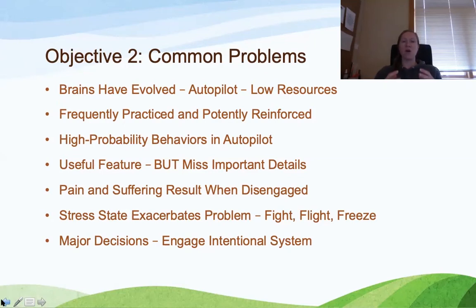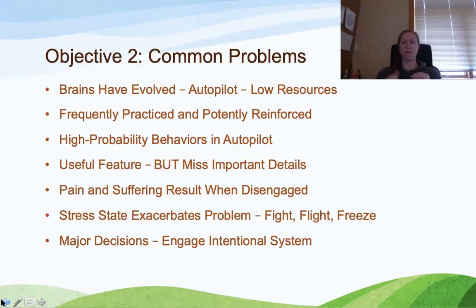Our brains and bodies have evolved to have a reflexive, automatic network of responding. Information comes in, it's processed, a decision is rapidly made, and within milliseconds a response is generated — whether that's a thought, words that come out of your mouth, a physical action. Something happens in response to that information coming in on autopilot.